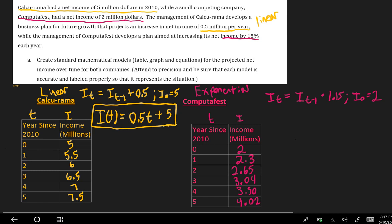And then for Computafest, it's going to be i of t equals 2 where we started, multiplying by 1.15, the common ratio raised to the t power, because that's exponential growth.